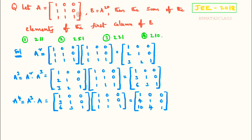Hello friends, I am Balaji Rao. Welcome to BR Max class. This is a very interesting question from JEE 2018, from the matrices chapter. They have given matrix A and they say that B is the same as A power 20. We need to find the sum of all the elements of the first column of B.